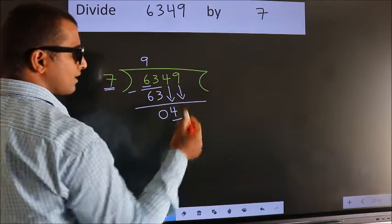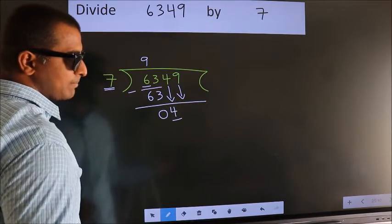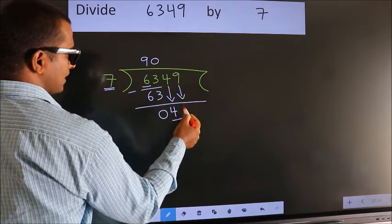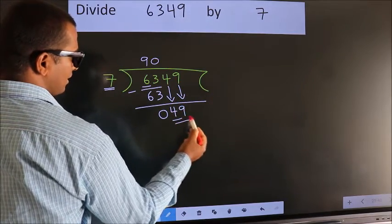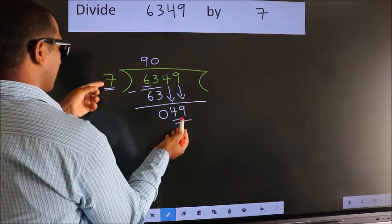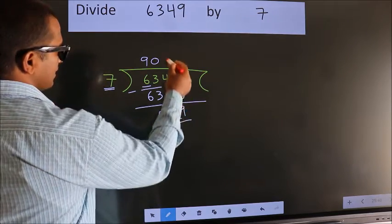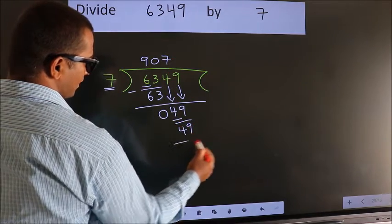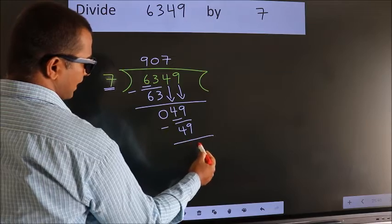And the rule to bring down second number is put 0 here. Then only we can bring down this number. So, 49. When do we get 49? In 7 table, 7 sevens 49. Now we subtract. We get 0.